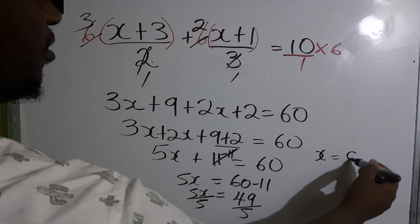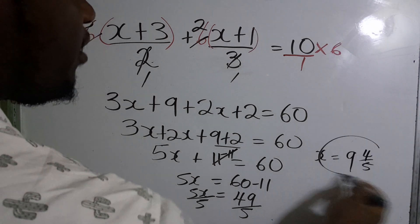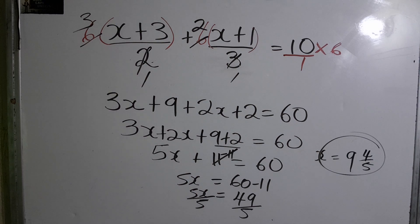Which gives us 9 and 4 over 5. So x is equal to 9 and 4 fifths.